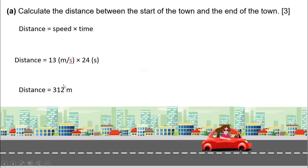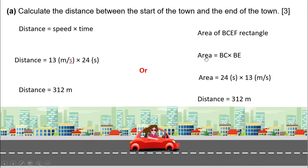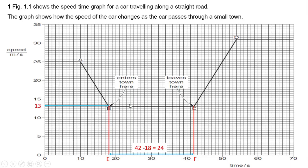The other method is we can find the distance by calculating the area under the graph. Here you can see the B, C, F, E rectangle. So we can find the distance by calculating the area of this rectangle. As you know, the area of a rectangle is length multiplied by width.